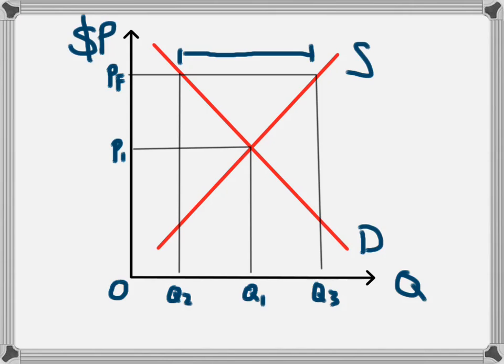And so by putting in a price floor we end up with an excess supply of that particular product, and the excess supply is of that level Q2 to Q3.